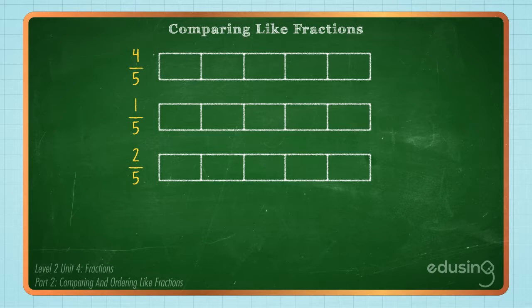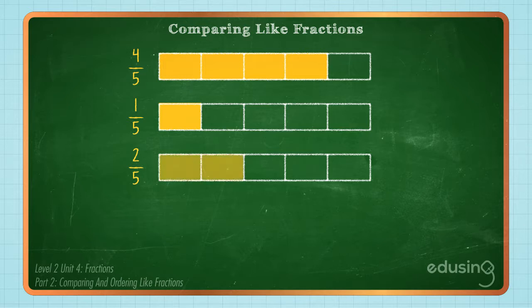4 fifths means 4 out of 5 equal parts are shaded. 1 fifth means 1 out of 5 equal parts is shaded. 2 fifths means 2 out of 5 equal parts are shaded.